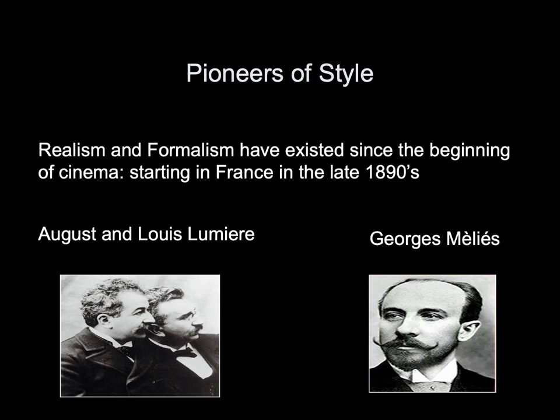Pioneers of style. Realism and formalism have existed since the beginning of cinema, starting in France in the late 1890s. We have two groups of filmmakers: Auguste and Louis Lumiere, and Georges Melies. We will analyze still images from both groups of directors to determine who is working within realism and who is working within formalism, and why.